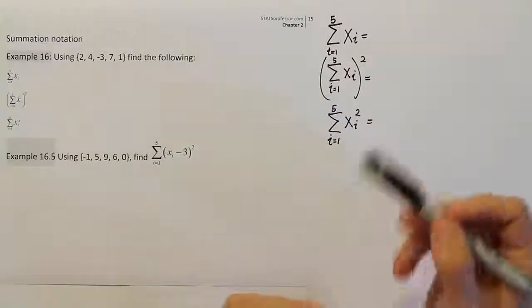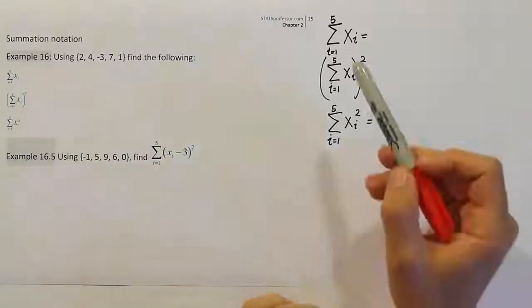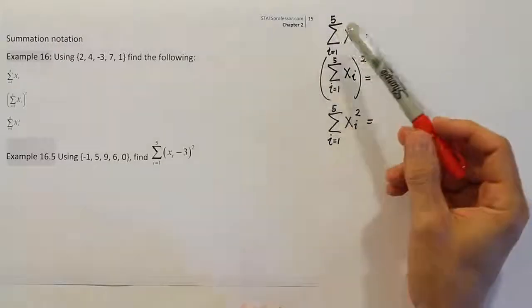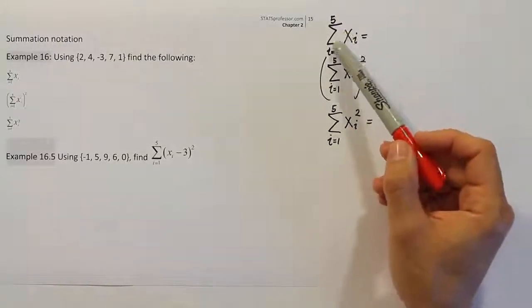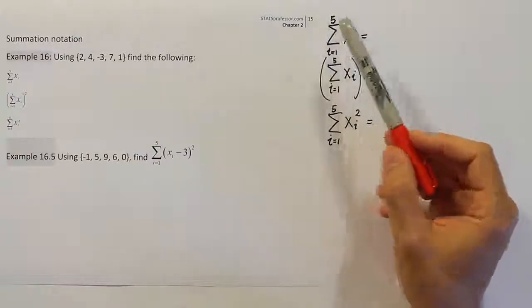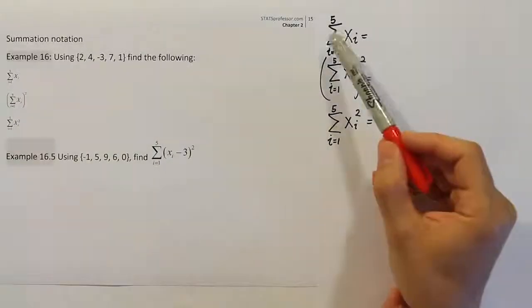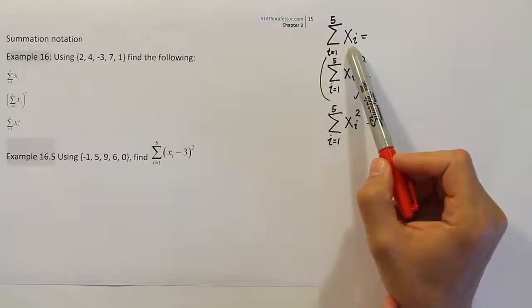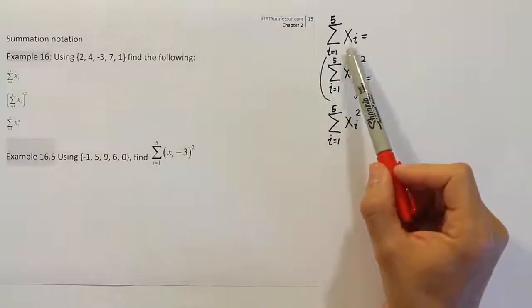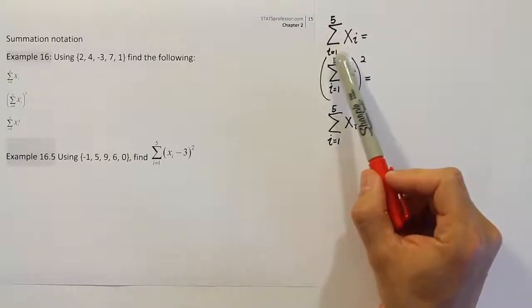The first one we should break down so that we understand essentially what they're asking us to do here. The summation symbol is this Greek letter sigma, and it means to add. So basically when we see that in this early part of statistics, we're going to think of it as meaning to add. And so they're telling us to add these things. Now these things are the x values. So they're using x to represent these generic data points. So they're saying, hey, add up all the x values.